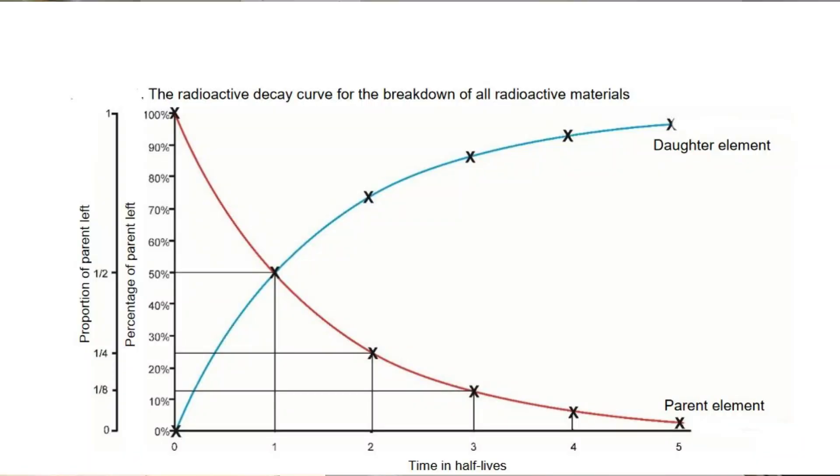Now for the rest of the parent isotope, after 5,730 years, half of that is going to decay again. So now you're left with a fourth of your original amount. That's going to decay into an eighth, into a sixteenth, so on and so forth. For this activity, just to keep the math simple, I have the half-life being 10 years, but you can convert that number to whatever you want.